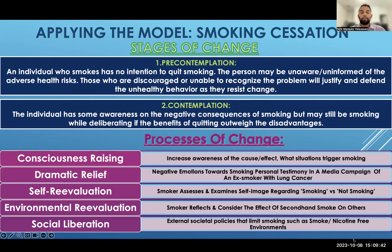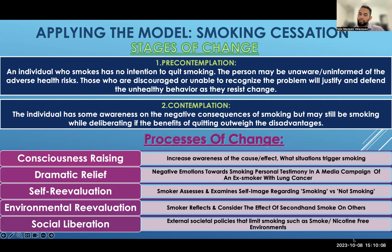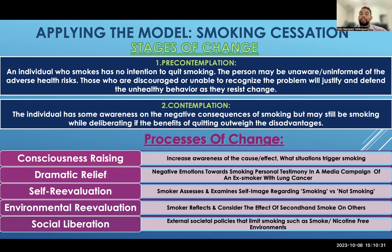Here we have an example of the trans-theoretical model being applied to smoking cessation. In pre-contemplation, the individual who smokes has no intention to quit — they may be unaware, uninformed, or discouraged, and will likely defend their right to smoke. In contemplation, they may have some awareness that smoking is bad for them but are still smoking, while in the back of their mind deliberating on the consequences and benefits of quitting. The processes applied in these two stages include consciousness raising to increase awareness, and dramatic relief to surface negative emotions towards smoking.